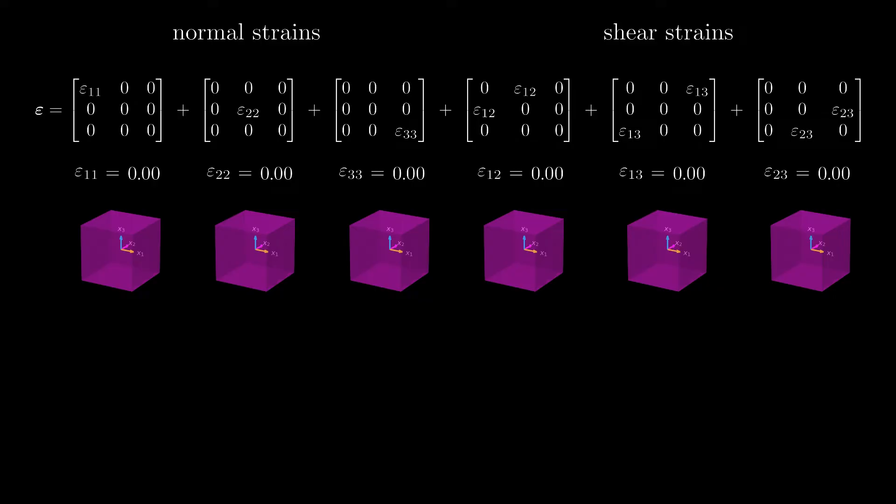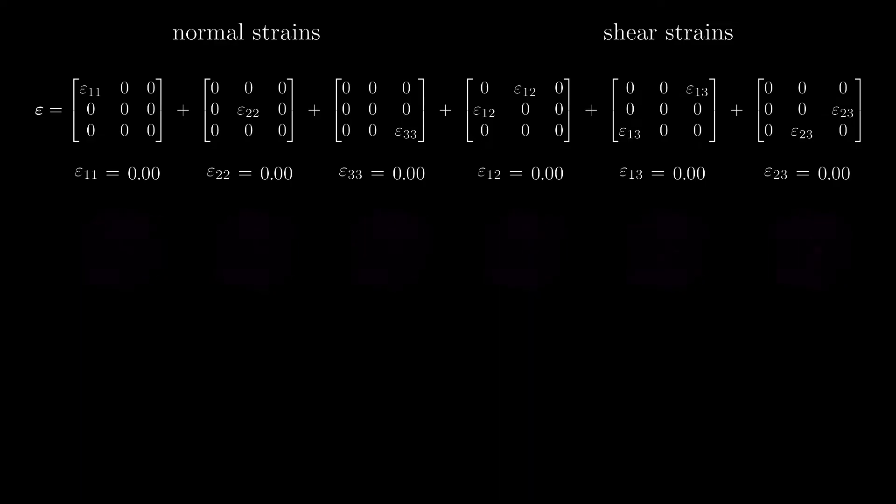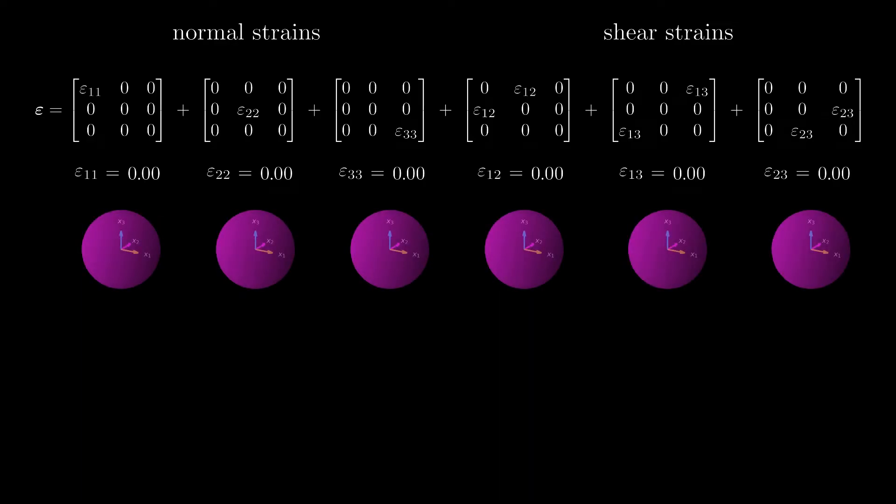Consequently, illustrating the same strain in two different coordinate systems would look different. To avoid this, we can choose another shape for the infinitesimal element. A sphere is a good choice because it is invariant to coordinate transformations.